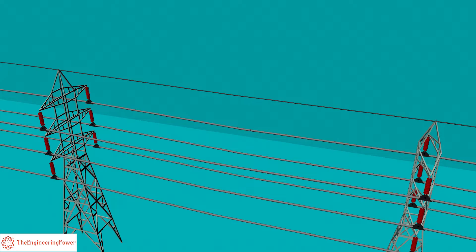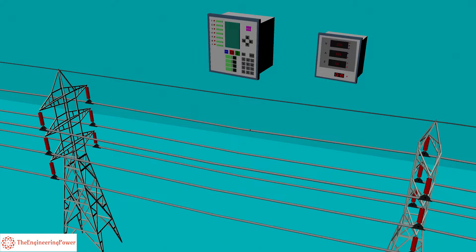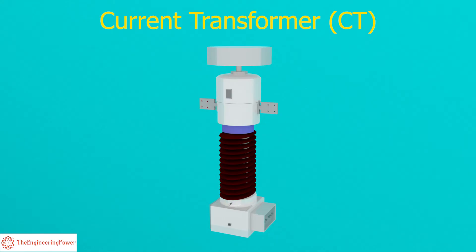High currents or voltages of the system cannot be directly fed to relays and meters. So then how is the current measured so accurately in such high power transmission systems? The answer is through a current transformer or simply called as CT.